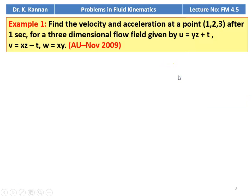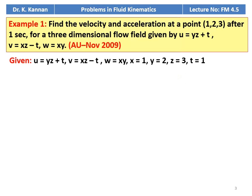The first example, example number 1 from November 2009 question paper. Find the velocity and the acceleration at a point (1, 2, 3) after 1 second for a three-dimensional flow field given by u equal to yz plus t, v equal to xz minus t, and w equal to xy. At the point x equal to 1, y equal to 2, z equal to 3, and time t equal to 1 second.